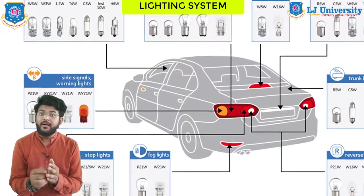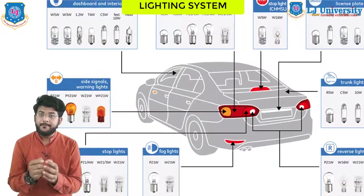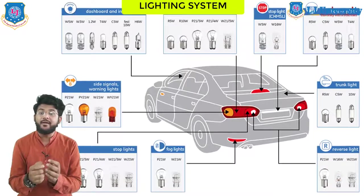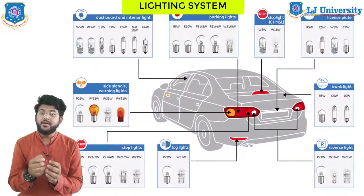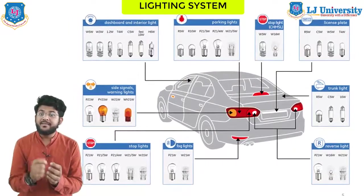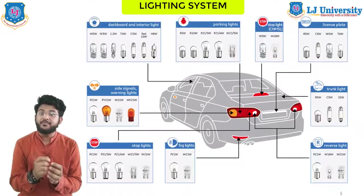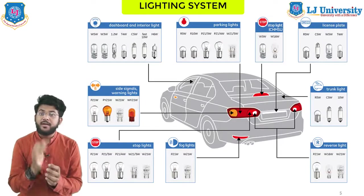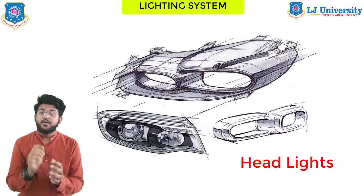Various lights of the vehicle have specific functions to either help the driver or to signal to other drivers. When used improperly, accidents can happen, so it is extremely important to be able to recognize the different types of lamps and know when to use them. Let's now see all these lamps briefly.